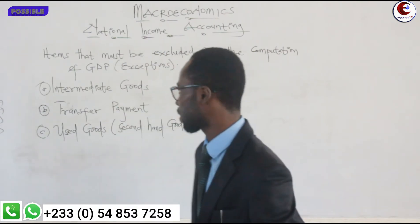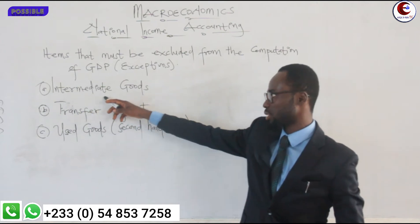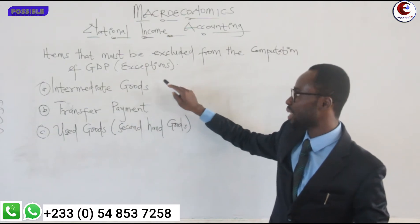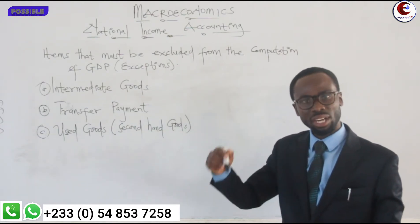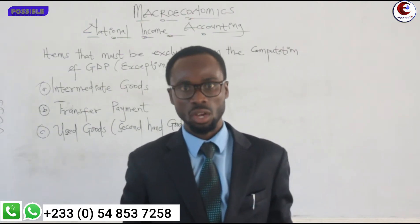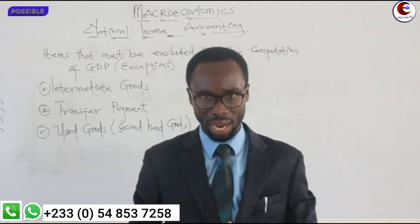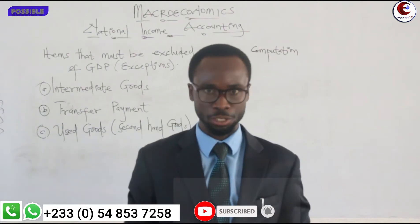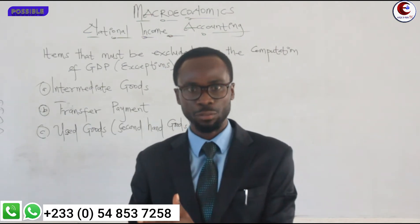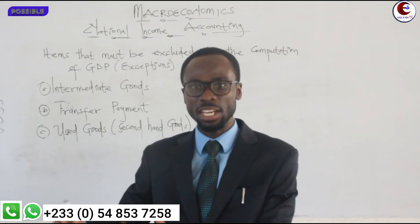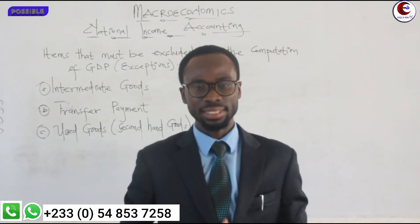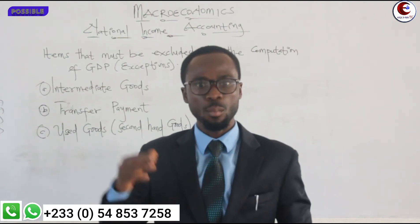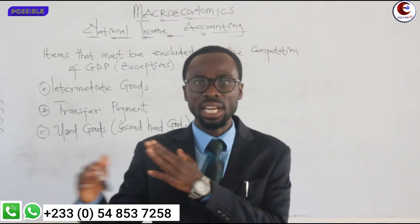The first item or transaction that must be excluded from GDP is what is called intermediate goods. Intermediate goods are the goods or items that are used for further production. We use capital goods for further production, and we use capital goods more than one financial year or more than one economic year.